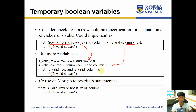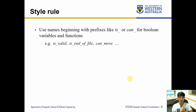As your conditions get larger, introducing temporary variables may save readability. You can also apply De Morgan's theorem to rewrite: if not is_valid_row or not is_valid_column, then print 'Invalid square.' This is much easier to read. In terms of style, it's recommended to use names beginning with prefixes like 'is' or 'can' for boolean variables and functions — for example, is_valid or is_in_file — making it intuitive to understand what's being stored.